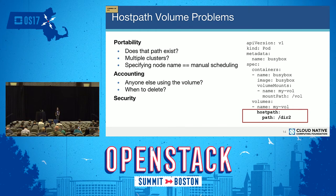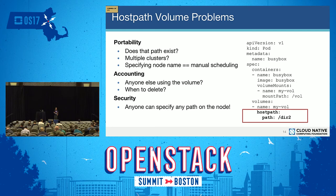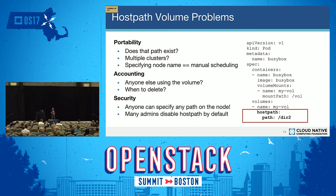The third and perhaps most serious problem is security. The user is the one specifying the path to this volume on this node — but what prevents a malicious user from specifying any path and potentially reading anyone's data, corrupting the system, or deleting system files? For that reason, a lot of administrators disable host path volumes by default. If you're working in a cluster where you can't use host path volumes, you're out of luck — you can't use local persistent storage at all.